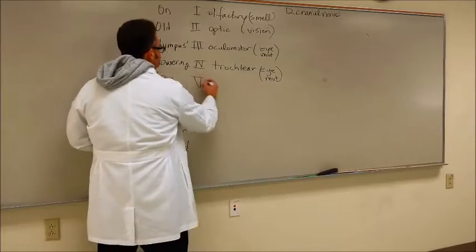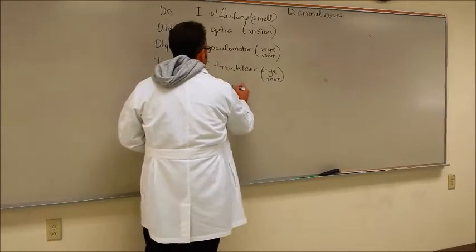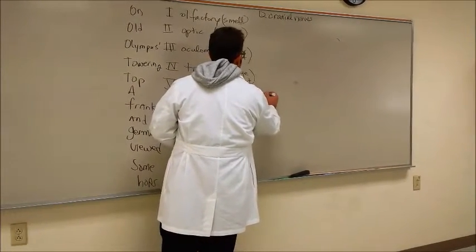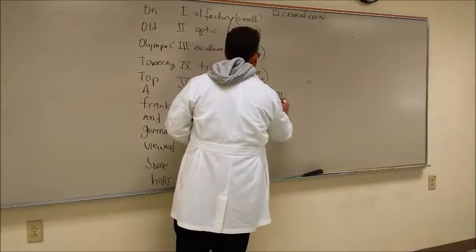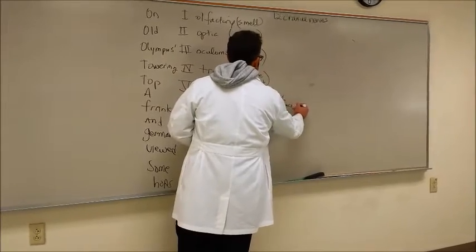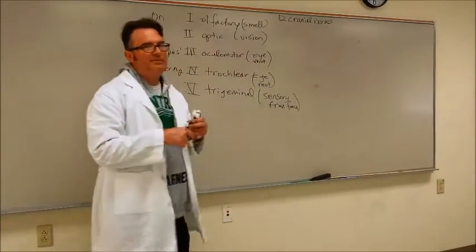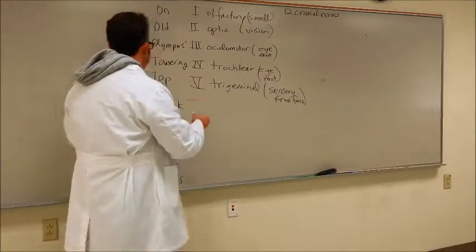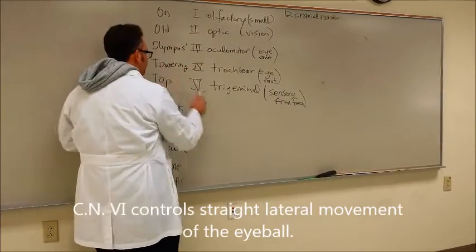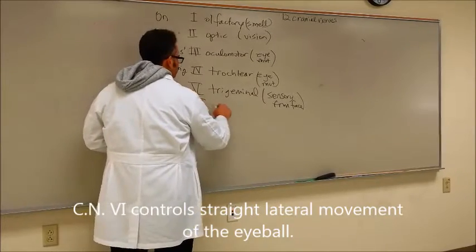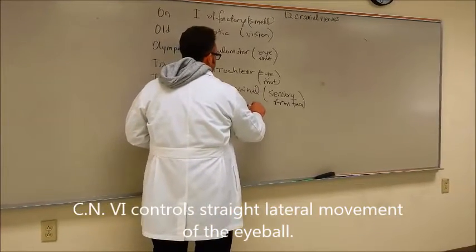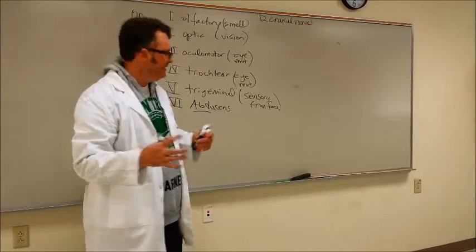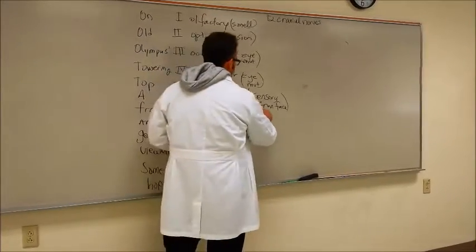Five is trigeminal, and this is basically sensory from the face. We get the word tri - this nerve has three major branches to it. A is abducens, cranial nerve six. In the word you can hear abduction somewhere in the middle of that, and this is also an eye movement nerve.